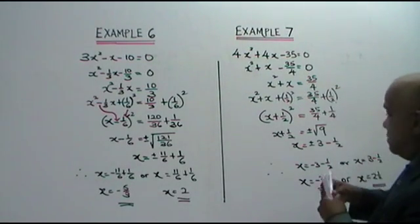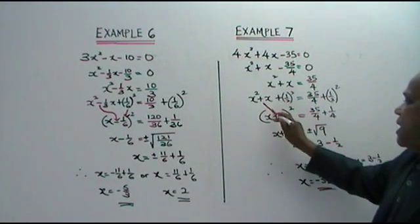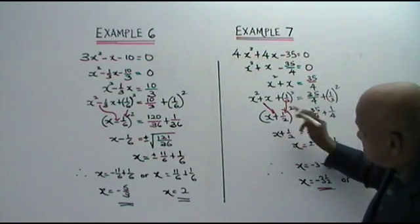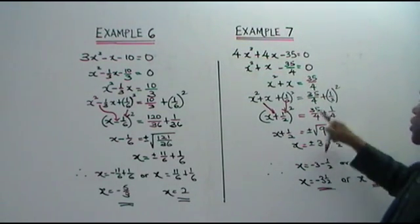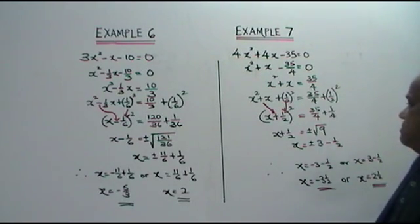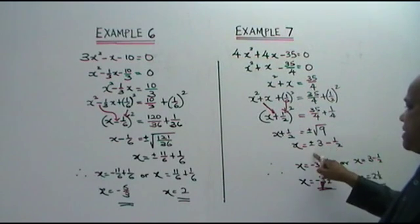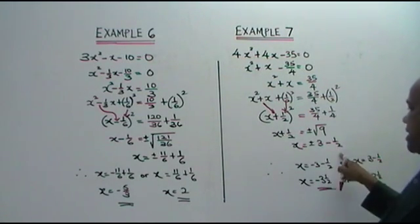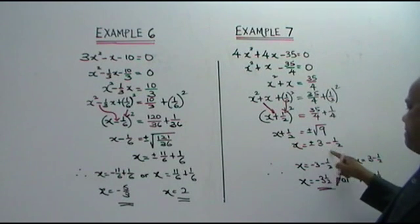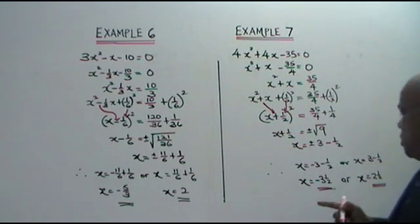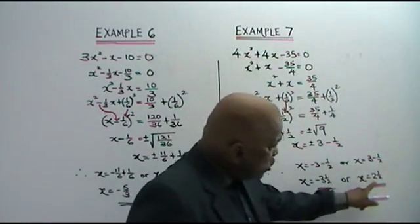So here you have x. Follow this sign — x plus 1 over 2. This number comes down. So x plus 1 over 2 squared equals to 35 over 4 plus 1 over 4, that is 36 over 4, which is 9. So the square root of x plus half equals to the square root of 9, plus or minus — that is positive or negative 3. Bring the half to the other side — you get negative half. Therefore x equals to negative 3 minus half, which gives you negative 3 and a half. Or 3 minus half, which gives you 2 and a half.